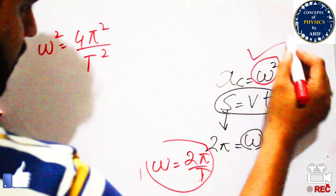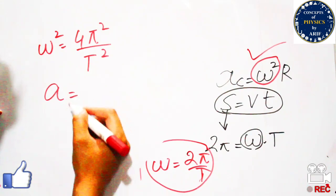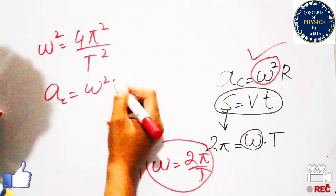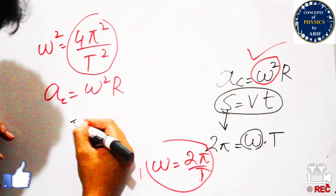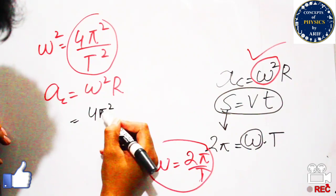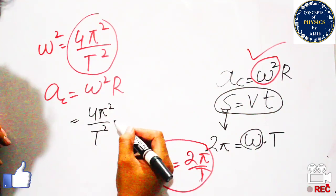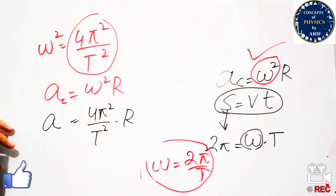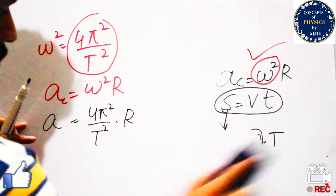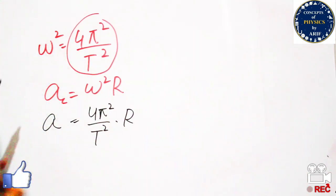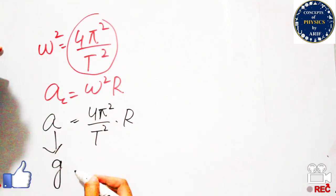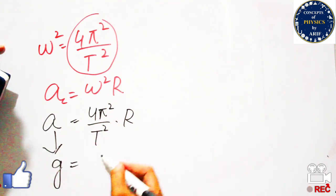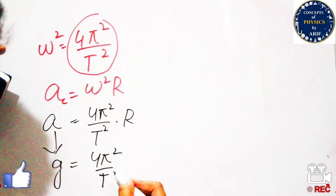Substituting into the relationship a = omega² × r, we get: a = (4π² / t²) × r. Since this acceleration is due to gravity, we can write it as g. So the final expression is: g = 4π²r / t².